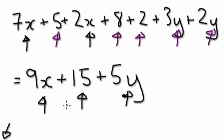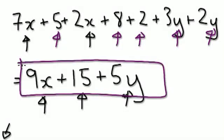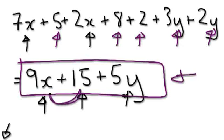Notice that here you've got elephants, hippos, and giraffes — they're all different now. You can't merge anymore, so this is your simplest form. You can't merge these; elephant and hippos are different. So you just have to leave it as it is.